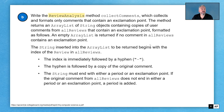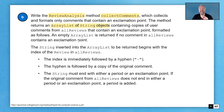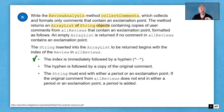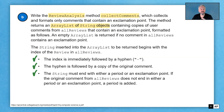Part B tells us to write a method for the ReviewAnalysis class called collectComments. What this is going to do is collect and format only the comments that contain exclamation points — the comments where people felt really strongly, good or bad, to the point of throwing in an exclamation point. The method returns an ArrayList of string objects containing copies of those user comments that contain an exclamation point, but they're going to be formatted a certain way: the index is immediately followed by a hyphen, then a copy of the original comment. The string must end with either a period or an exclamation point, so if the original comment doesn't end in either, we have to add a period to make them all uniform.